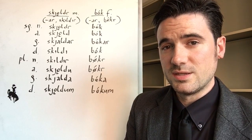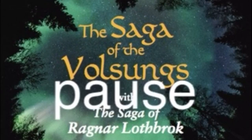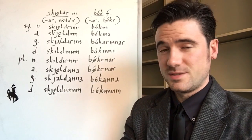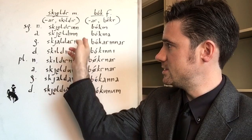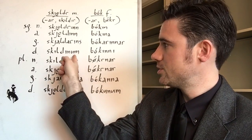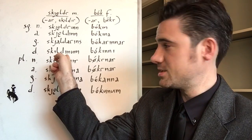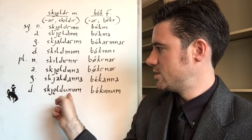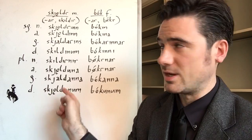Alright, now see if you can add the correct forms of the definite article to these two words. How did you do? The masculine definite article looks the same no matter the class of masculine noun. So we get IN, IN, INS, INU dropping the I from the article because the noun already ends in an I. SKJǪLDRINN, SKJǪLDINN, SKJALDARINS, SKILDINUM, SKILDIRNIR, SKJǪLDINA, SKJALDANNA, SKJǪLDUNU, just like with any masculine noun.